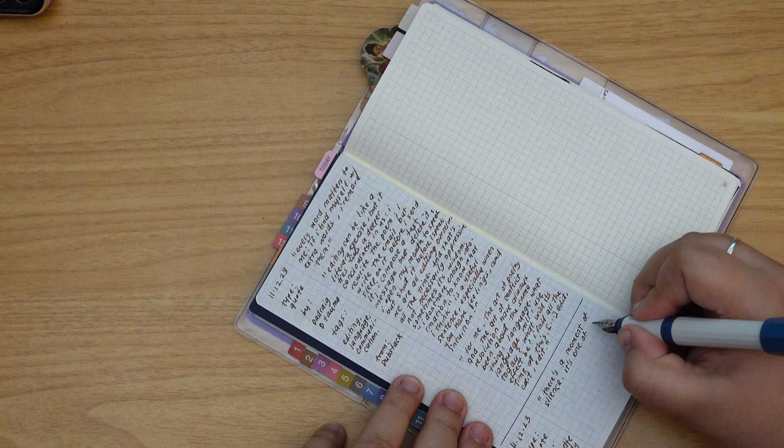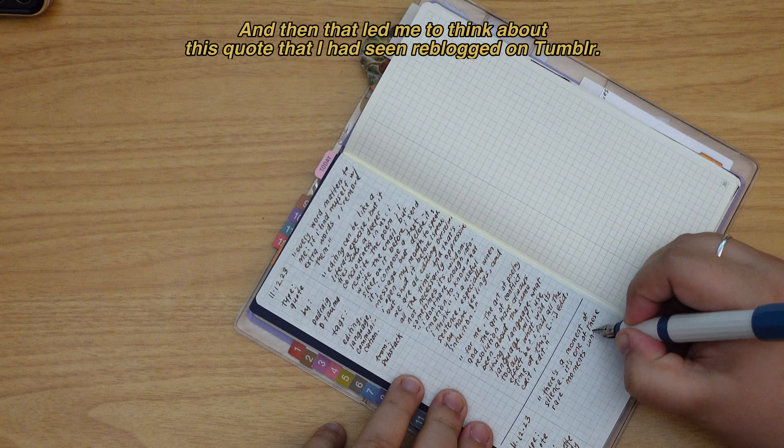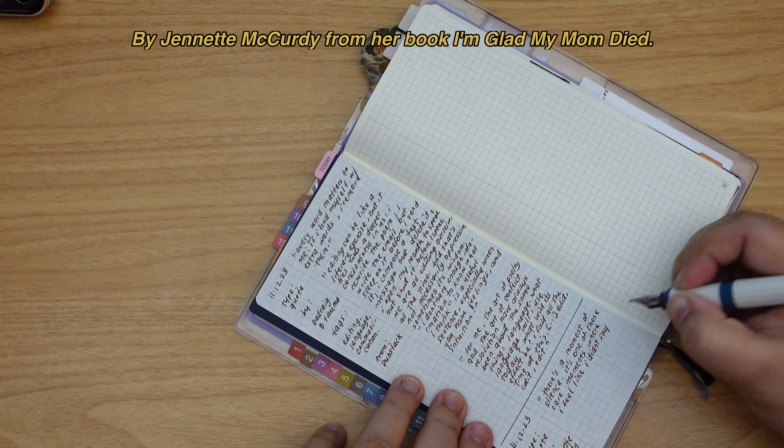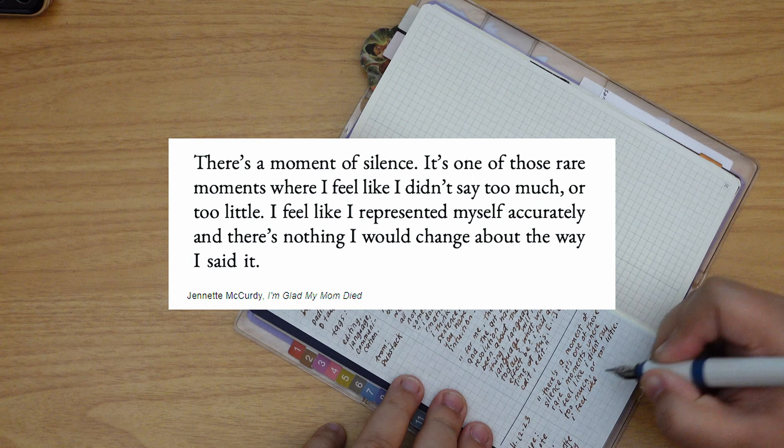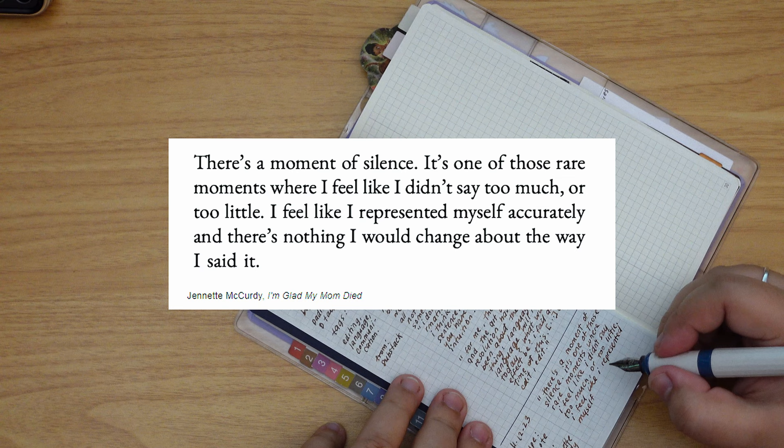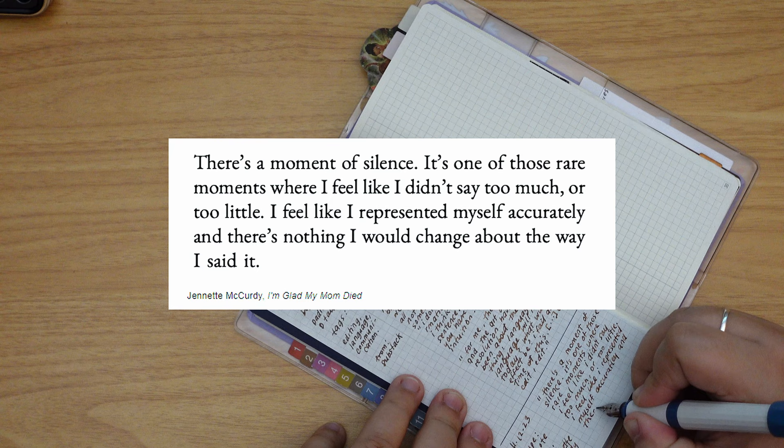And then that led me to think about this quote that I had seen reblogged on Tumblr. It's by Jennette McCurdy from her book I'm Glad My Mom Died, and in it she says: There's a moment of silence. It's one of those rare moments where I feel like I didn't say too much or too little. I feel like I represented myself accurately and there's nothing that I would change about the way I said it.